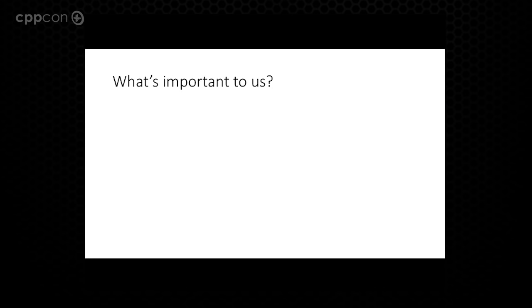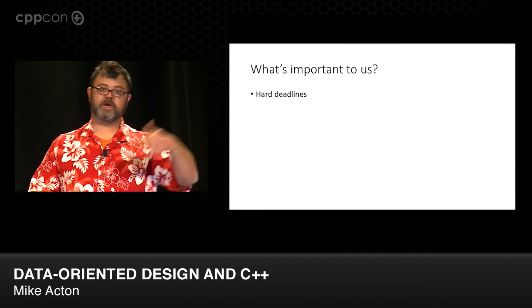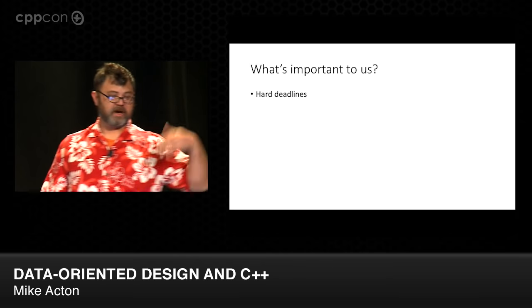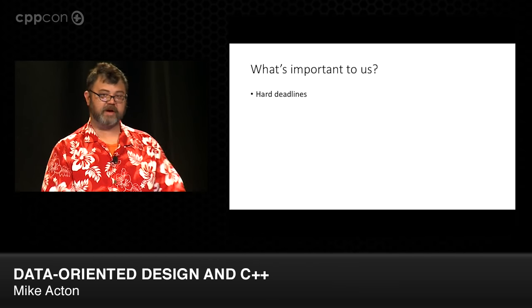We're both on the console and very concerned with the characteristics of that machine, as well as on our PC development side concerned with the characteristics of our development machines. So I wanted to give you an idea of our values. Hard deadlines are critical to us. We know when we're going to ship a game to the day — Sunset Overdrive will be on the shelf on October 28th. We have multiple games in flight, millions of dollars in marketing money depending on the pipeline. There's no missing this. There's no flexibility here.